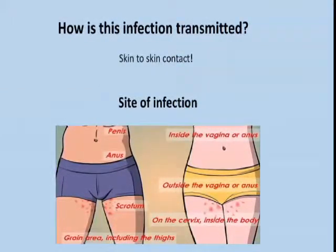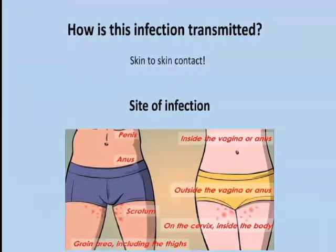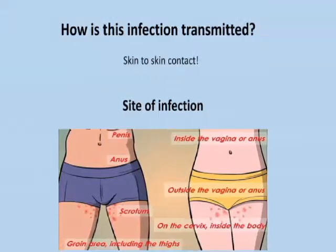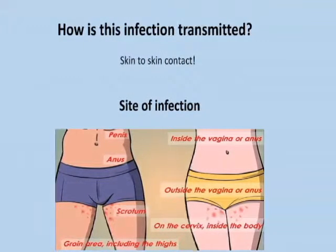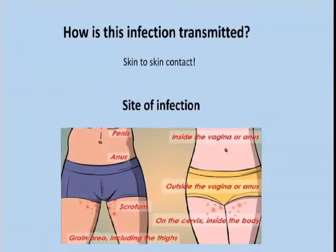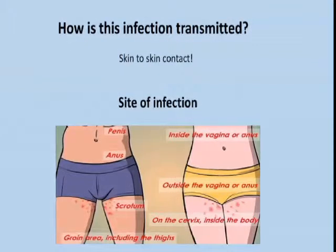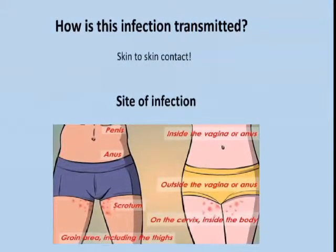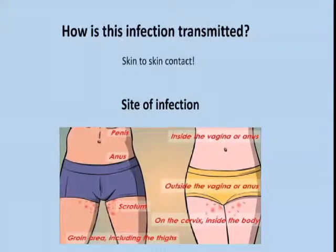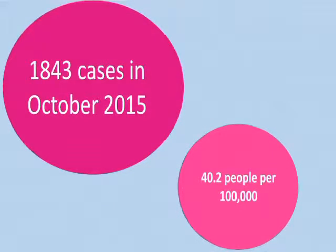The sites of infection include the thighs and genital areas. In males, warts can develop on the outer skin of the penis and sometimes on the scrotum. In females, warts can develop outside the vagina, on the vulva, and sometimes inside the vagina and the cervix. Warts can also develop around or inside the anus in both males and females. Wart development can also occur inside the urethra.